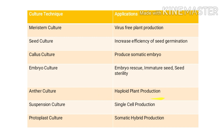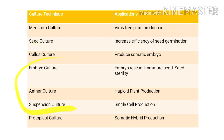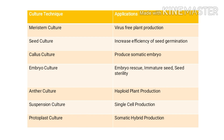For haploid plant production, anther culture can produce haploid plants since anthers are haploid in nature. For suspension culture, which originates from callus culture, generally callus culture is the initiation point of suspension culture — when we deal with single-cell production we perform suspension culture, and when we deal with multiple cells we perform callus culture. After that, in protoplast culture, the application is somatic hybrid production, because in protoplast culture we can fuse protoplasts from two distantly related species to form hybrids.